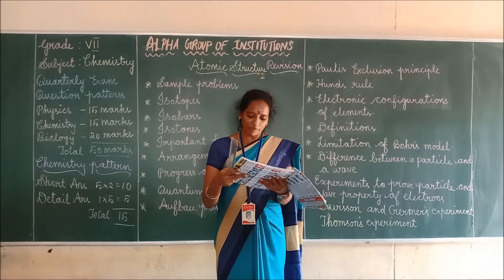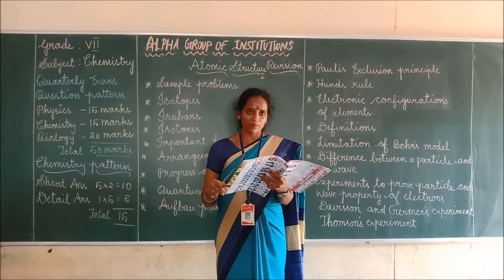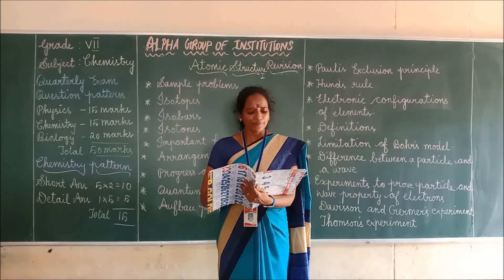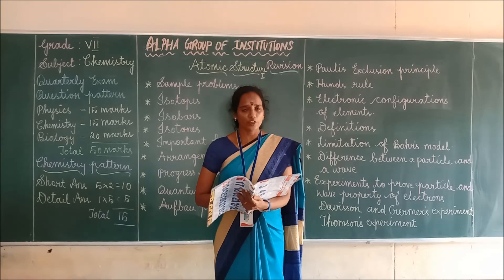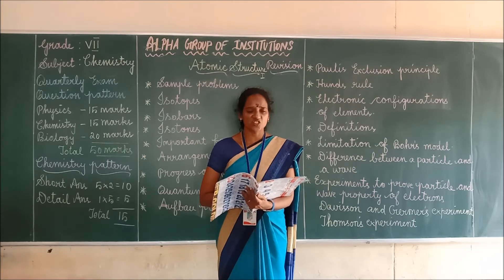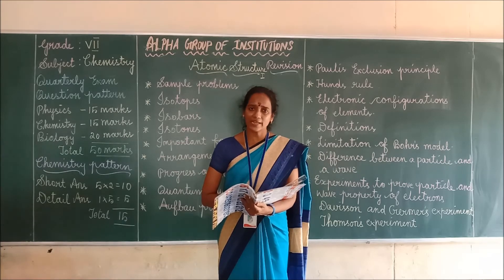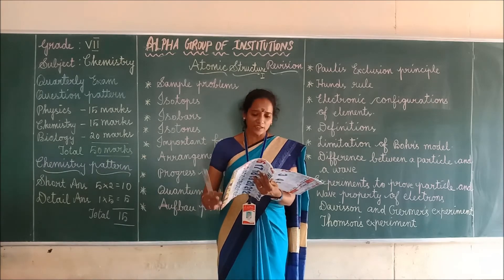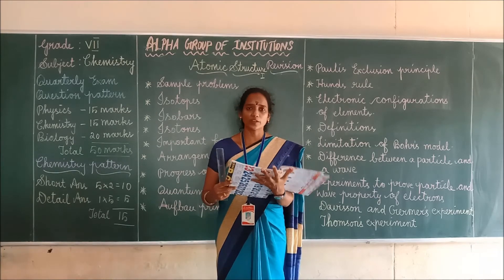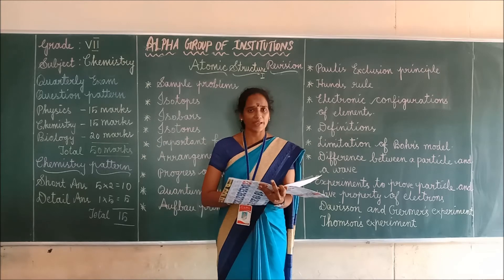Next, come to page number 5 — arrangement of electrons in the atom. A diagram is given; go through the diagram. Then page number 6: what is known as the electronic configuration of an element? The arrangement of electrons in the various shells of an atom of the element is known as the electronic configuration. Page number 7, limitations of the Bohr model — totally 5 points are given, and if this question comes as a detailed answer, you should write all 5 points.